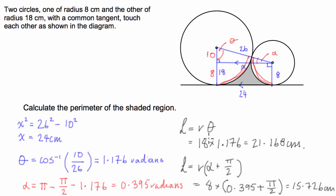Now that we have all of the information that we require, we can go about calculating the perimeter. So I'll put it up above the question. So the perimeter is going to equal the base, which we worked out to be 24, plus the arc length of the big circle, which is 21.168, plus the arc length of the small circle, which we calculated to be 15.726. And if we sum those together, we get 60.89 centimetres.